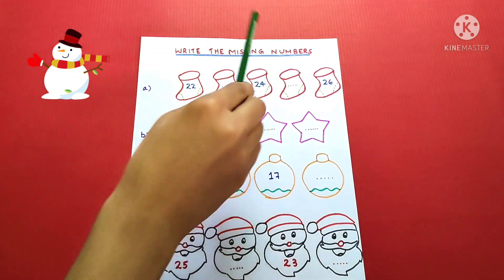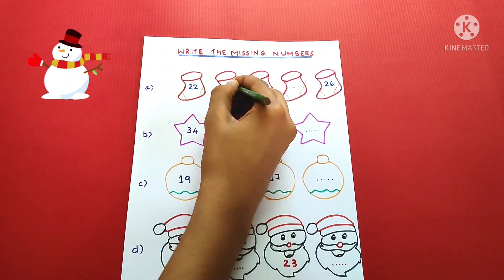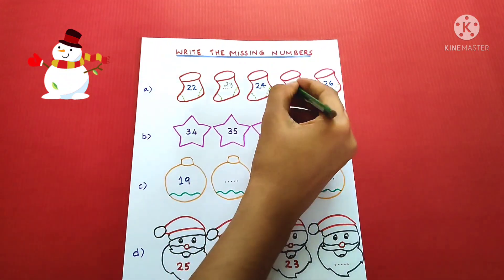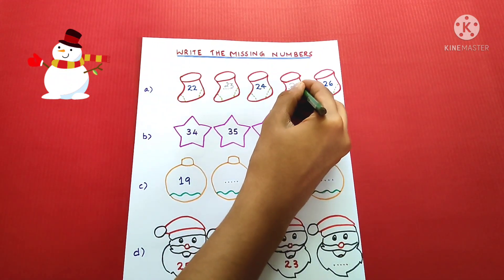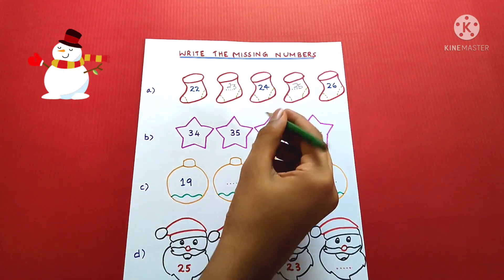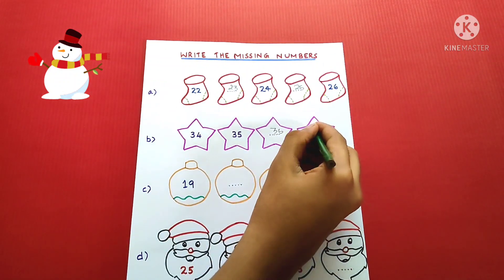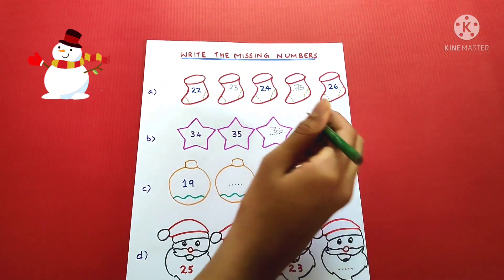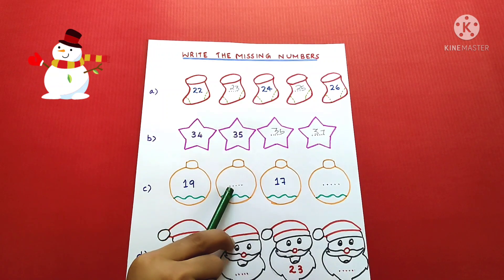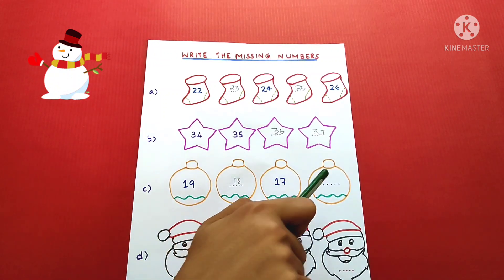Write the missing numbers. 22, 23, 24, 25, 26. 34, 35, 36, 37. 19, 18, 17, 16.